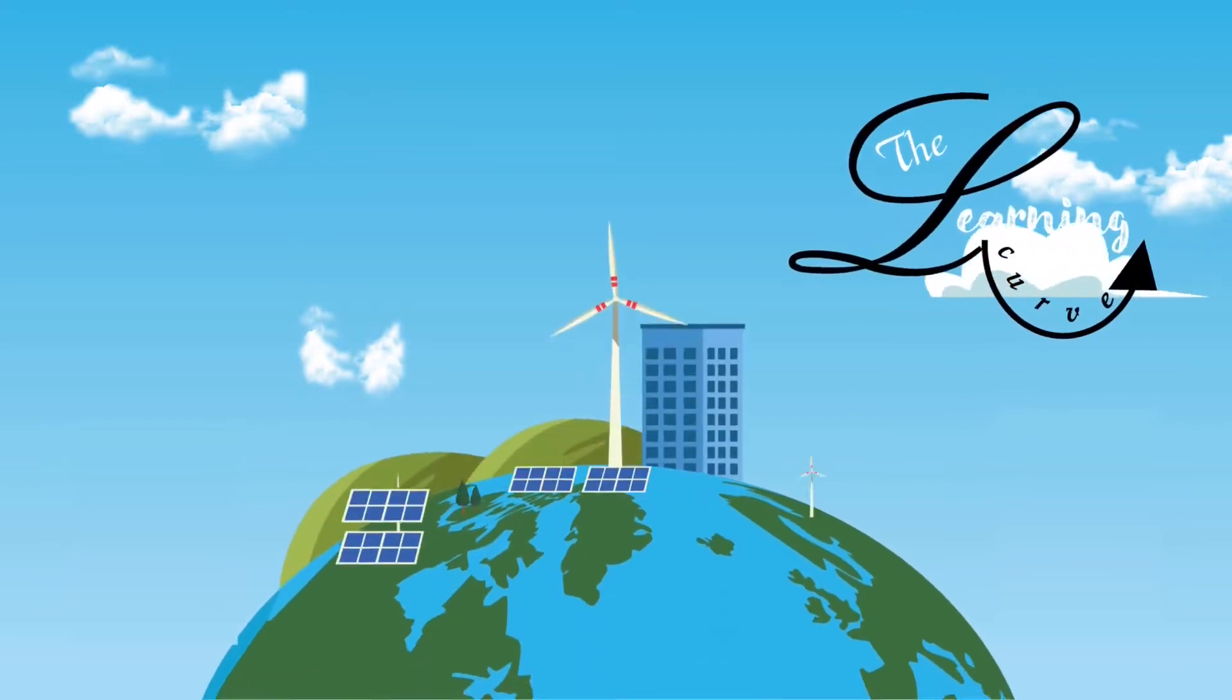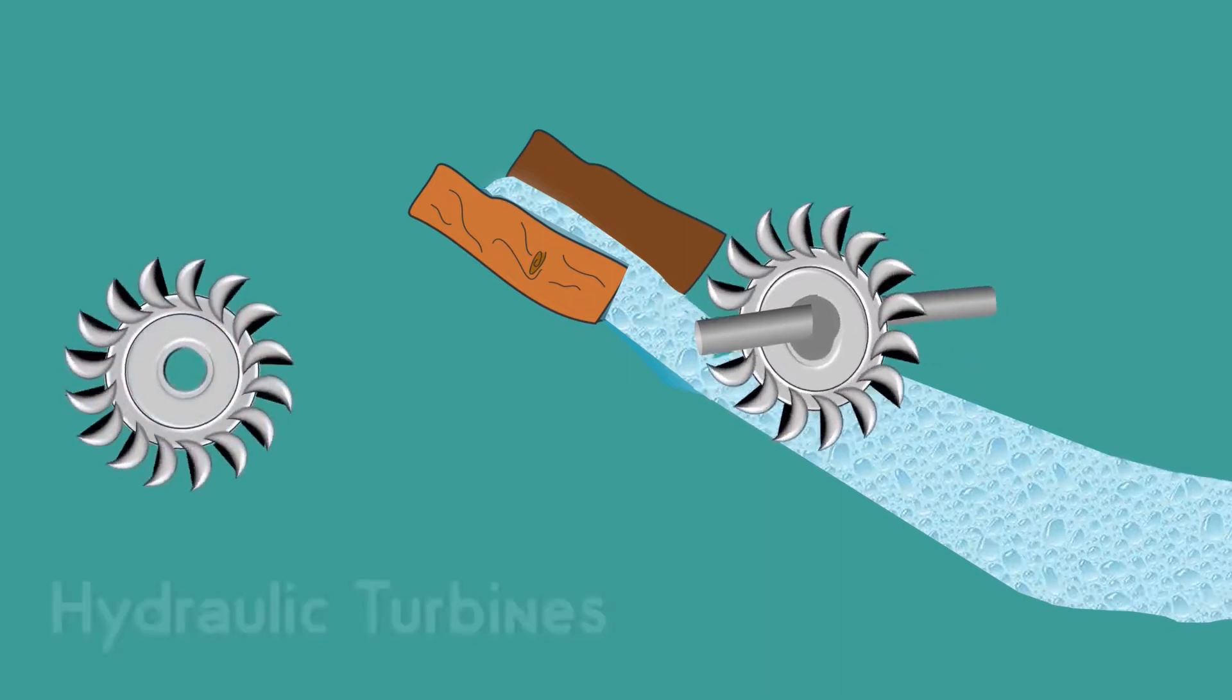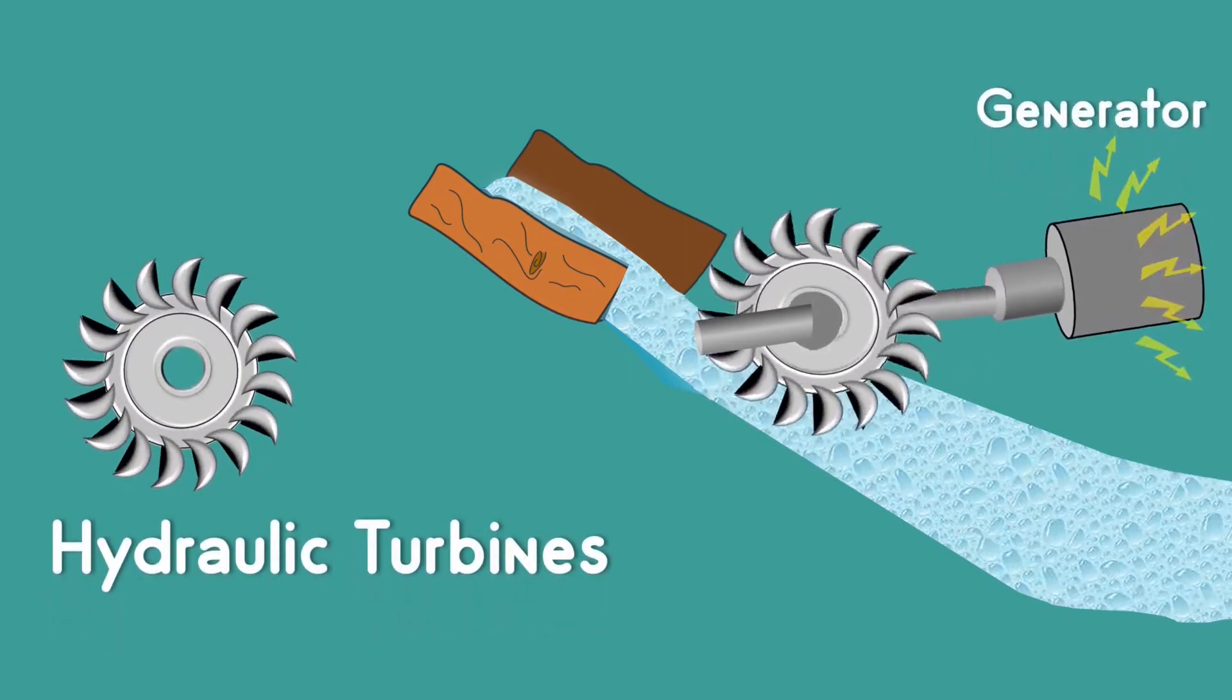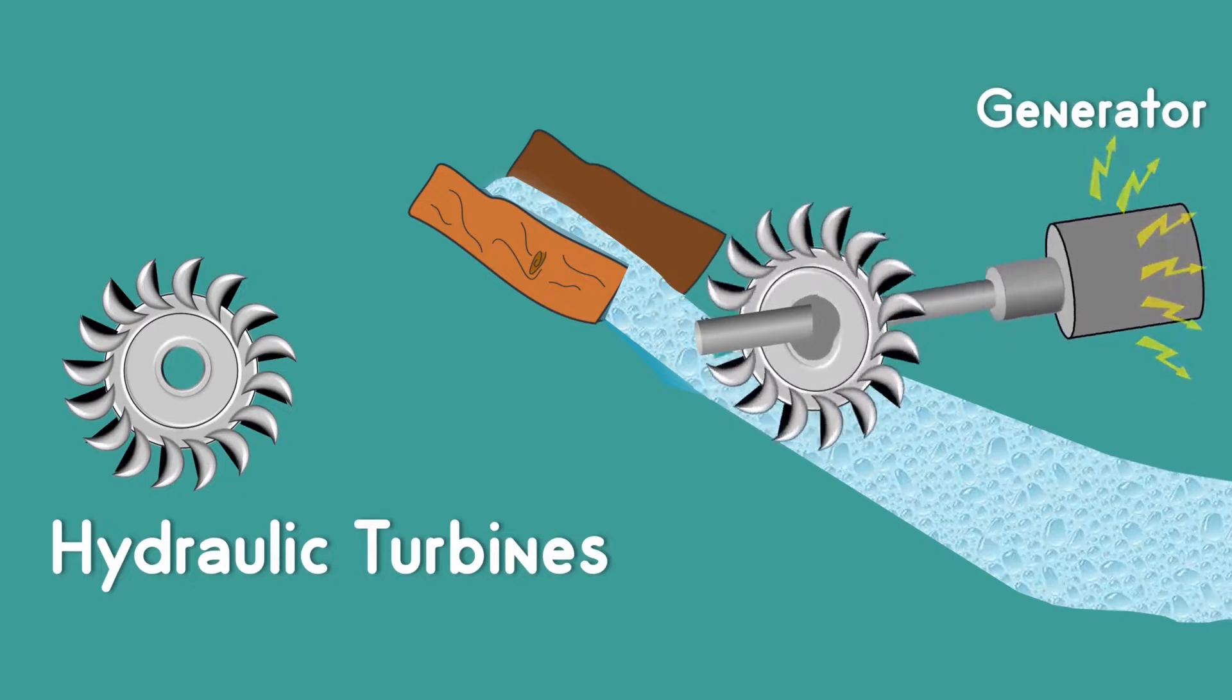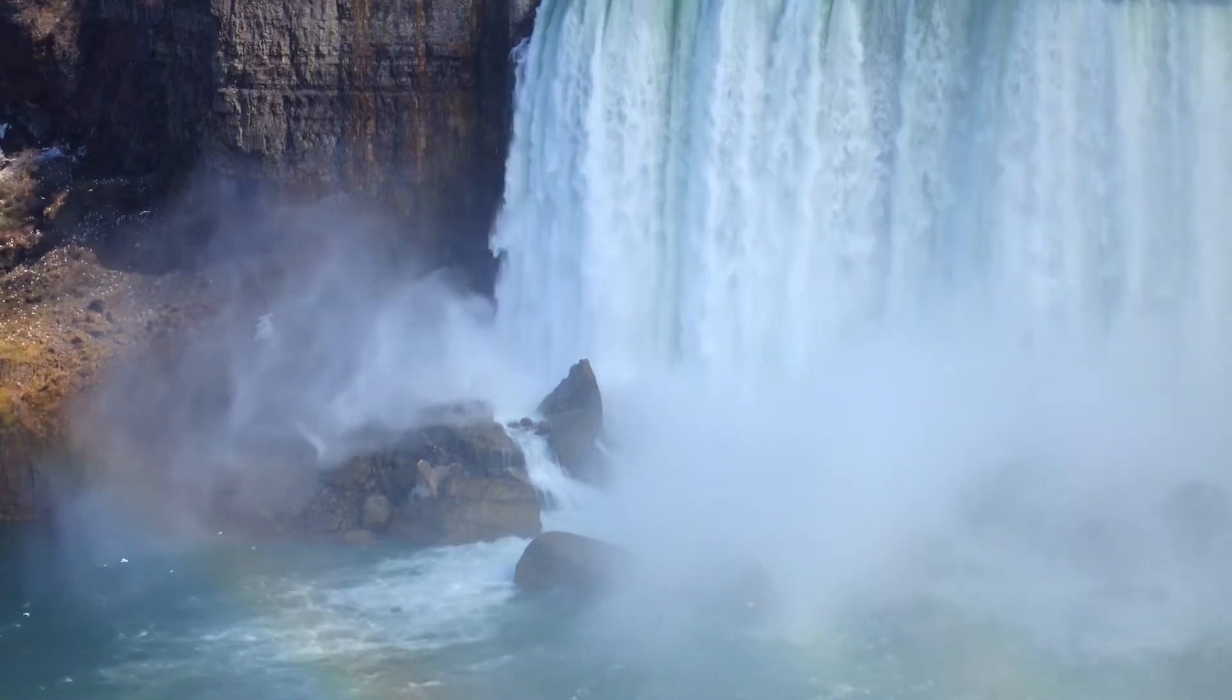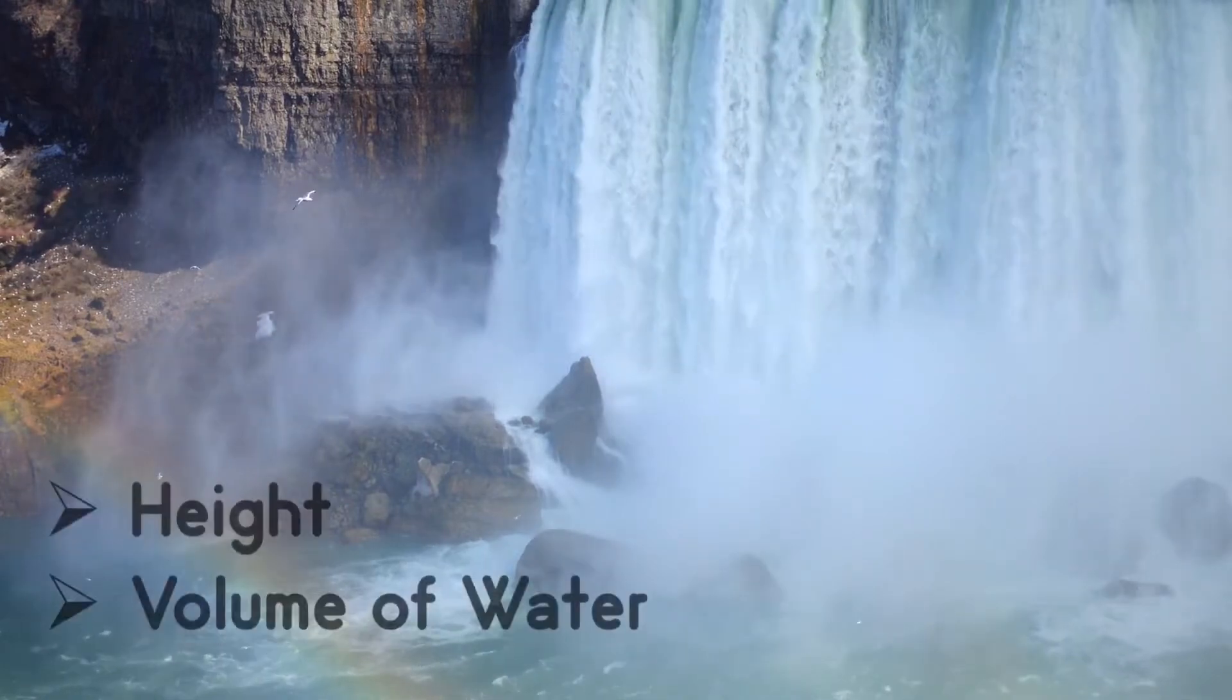Hi, I am Benila and this is the learning curve. Hydroelectric power plants convert the energy of falling water into rotational mechanical energy and consequently to electric energy using generators that are connected to the turbines. If you have ever stood next to a waterfall, you can feel its power. It mainly depends on two things: height and volume of the water.